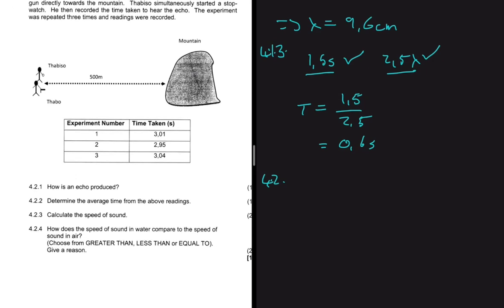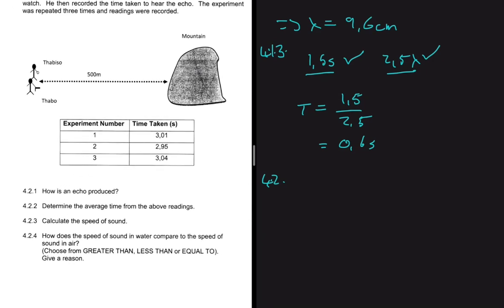4.2.1: How is an echo produced? An echo is produced by sound waves reflecting off a surface.